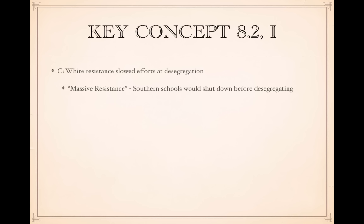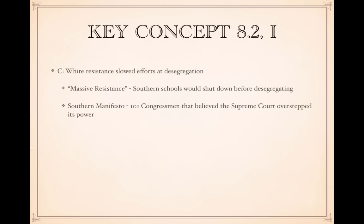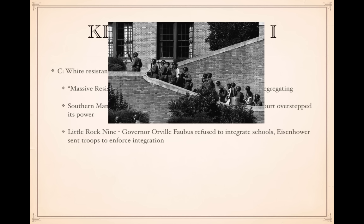White resistance to desegregation was significant. 'Massive resistance' was the idea in the South that schools would rather shut down than desegregate — and some actually did close. The Southern Manifesto was written by 101 congressmen who believed the Supreme Court overstepped its power in Brown v. Board, arguing that the 14th Amendment never explicitly mentioned segregation. The most well-known example of resistance is the Little Rock Nine, when Governor Orval Faubus of Arkansas refused to integrate schools and President Eisenhower nationalized troops to enforce the integration of nine African American students.